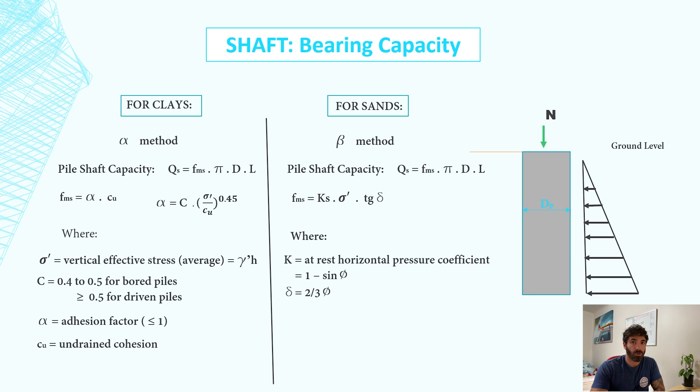It is given by 1 minus sin θ. For example, for an angle of friction of 30 degrees, K is equal to 1 minus sin θ, which is 0.5, and that means that half of the pressure of that soil is pushing sideways. σ is the vertical effective stress and δ is two-thirds of the angle of friction. A couple of things to take into consideration.